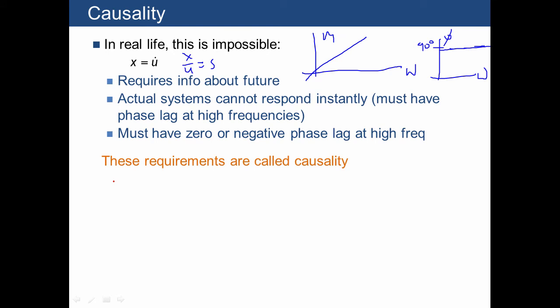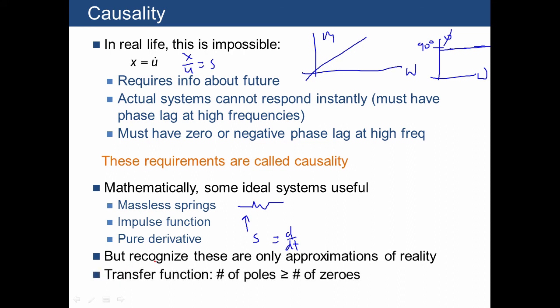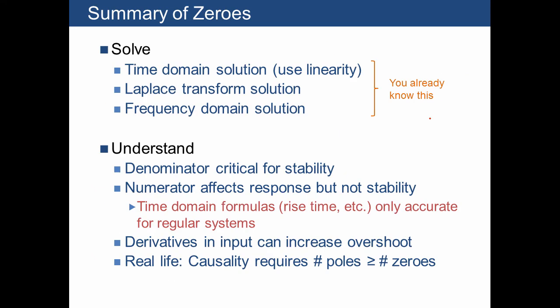These requirements are called causality. And mathematically, we've already dealt with some real idealizations, such as masses and springs. We've also defined the pure impulse function. And similarly, the derivative function is not actually realizable in any true physical system. So these are only approximations of reality, and the rule that causality implies is that the number of poles in a system must be greater than or equal to the number of zeros. This doesn't say that we can't work for our convenience with transfer functions such as this. It just means that in real life, they can't actually sustain the positive phase lag over all frequencies.